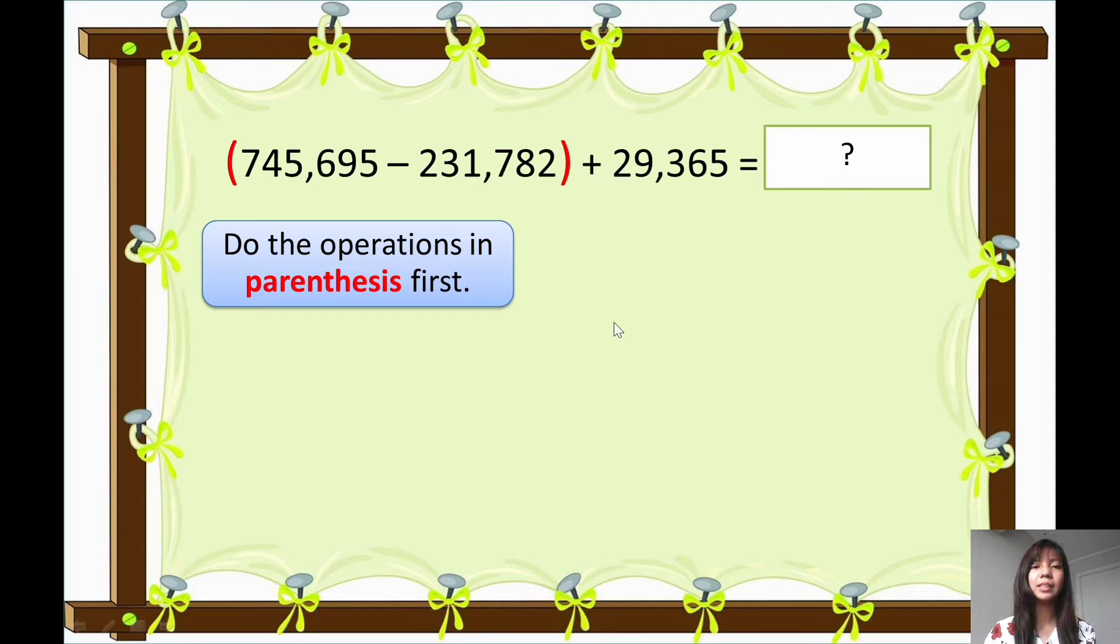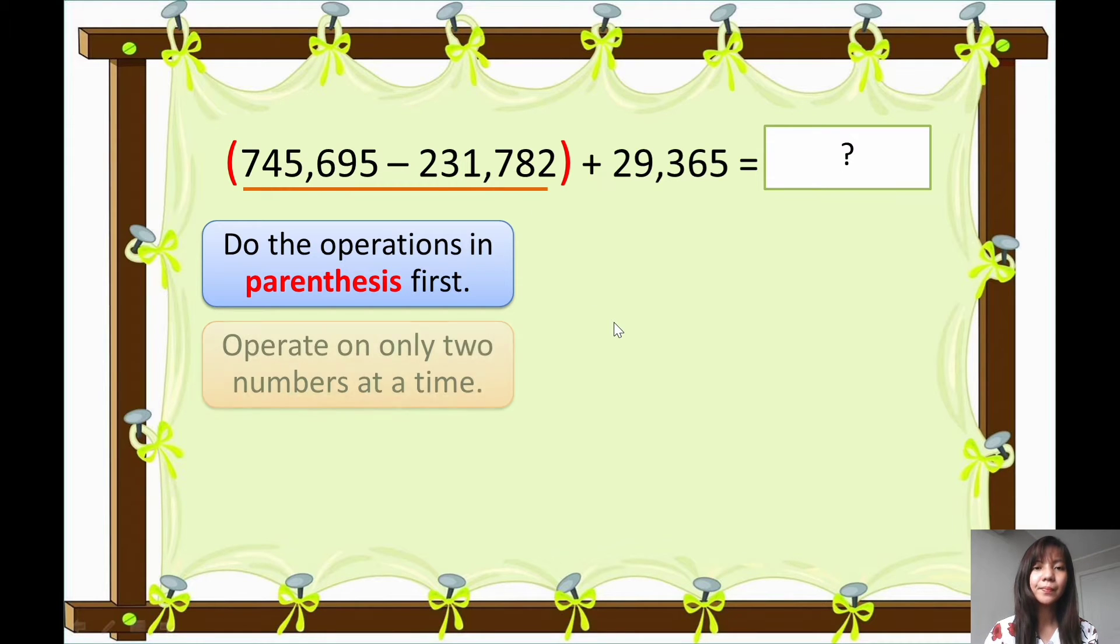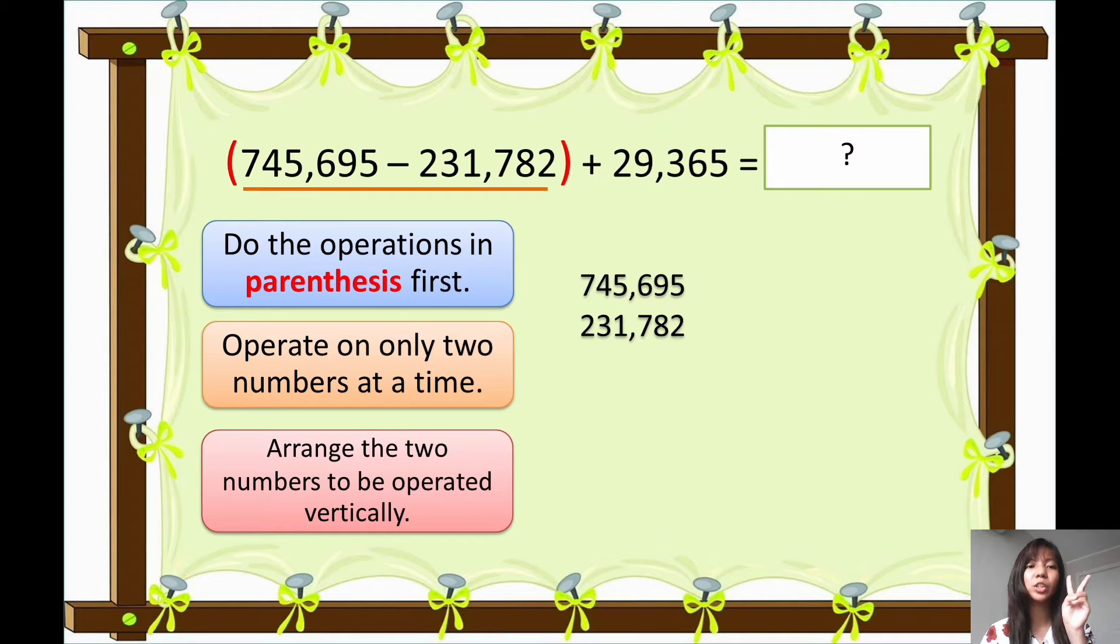Okay, so let's write. And then operate on only two numbers at a time, so only two numbers at a time. So first, the two numbers inside the parenthesis. So let's subtract like this. Okay, you have to arrange the two numbers to be operated vertically like this one, so that it will be easier for us to subtract or add.